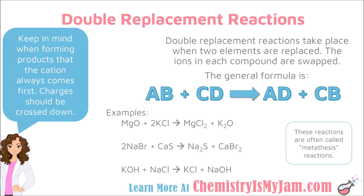The last video focused on double replacement reactions. These were reactions where compounds swapped ions, and the general formula was AB plus CD yields AD plus CB. There is a link to that playlist in the description. But this video is going to focus on a specific type of double replacement reaction — precipitation reactions.